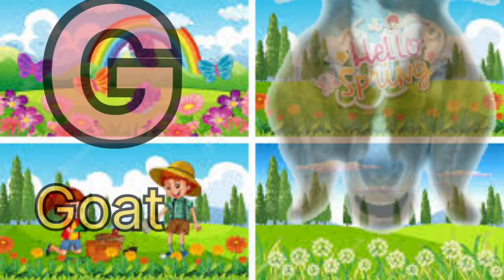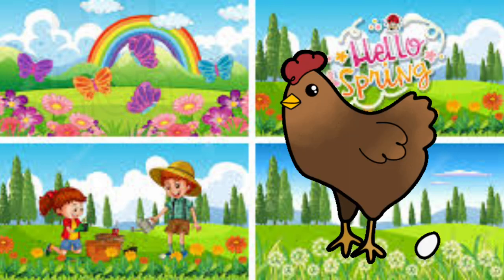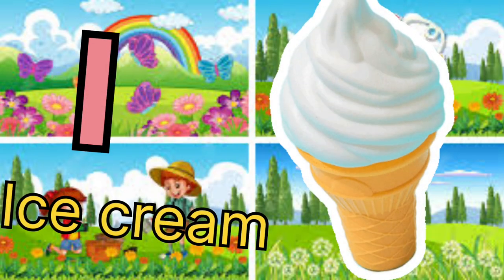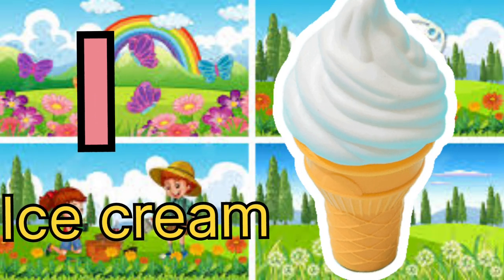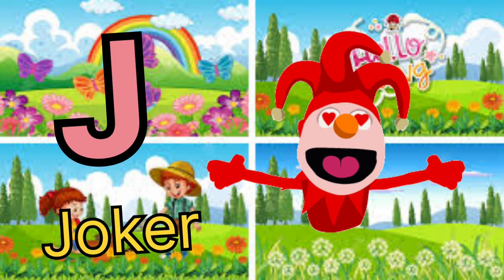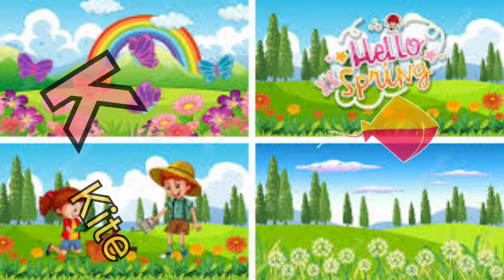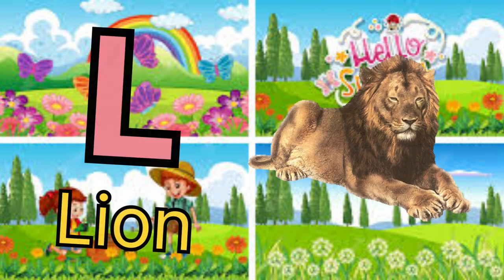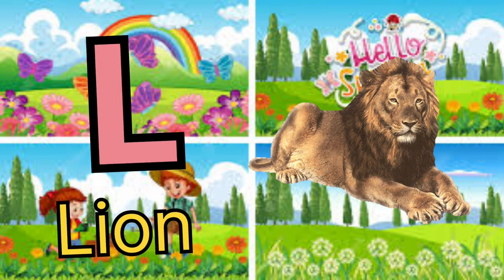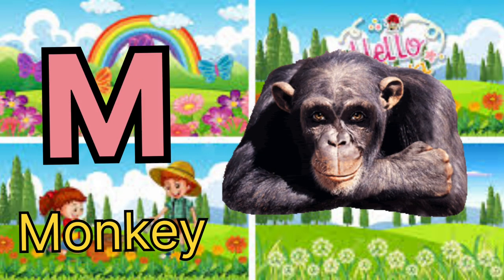G for goat, H for hen, I for ice cream, J for joker, K for kite, L for lion.